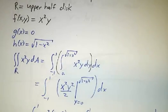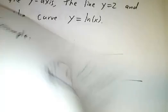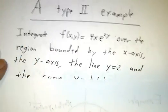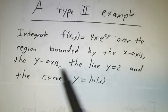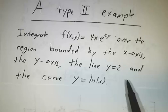Okay, now that we've done a type 1 region, let's do a type 2 region. So this time, we want to integrate 4x e to the 2y over a region bounded by the x-axis, the y-axis, the line y equals 2, and the curve y equals natural log of x.